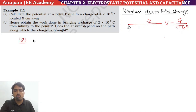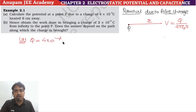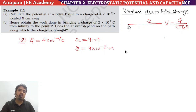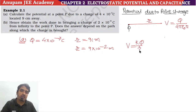In Part A, the given values are: Q = 4×10⁻⁷ coulomb, and distance R = 9 centimeters, which we convert to meters as 9×10⁻² meters. We can write V = KQ/R, where K = 9×10⁹.